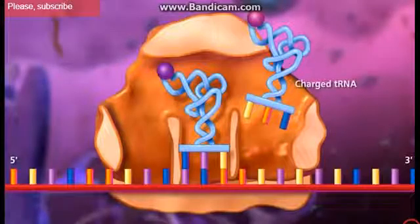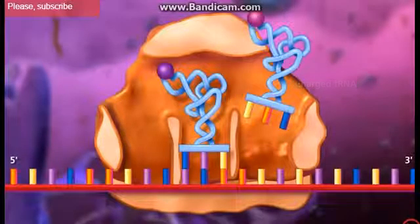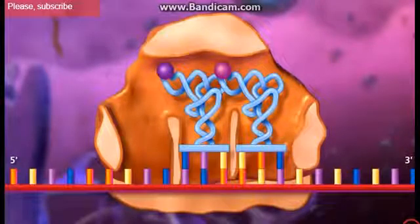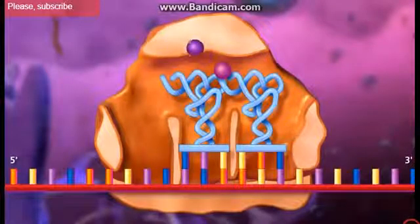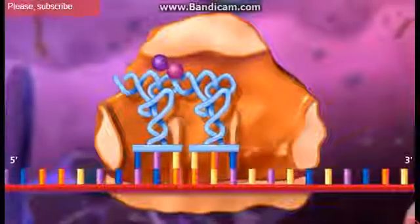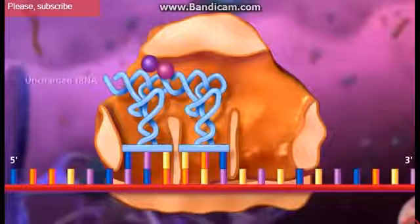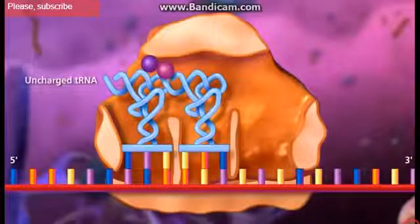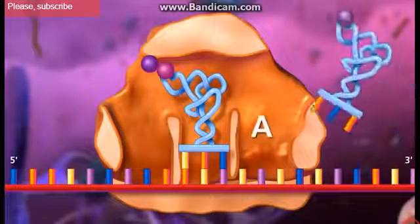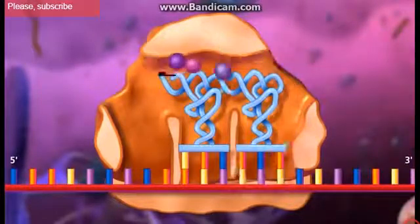A charged transfer RNA molecule binds to the A site and a peptide bond forms between its amino acid and the one attached to the transfer RNA molecule at the P site. The complex slides down one codon to the right where the now uncharged transfer RNA molecule exits from the E site and the A site is open to accept the next transfer RNA molecule.